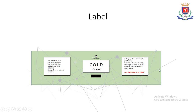This indication has to be mentioned in bold, capital, and red color. Other details such as manufacturing license number, batch number, manufacturing date, expiry date, MRP, and storage conditions are to be mentioned. With this, our cold cream formulation is ready. Thank you.